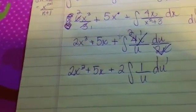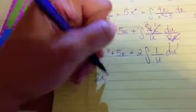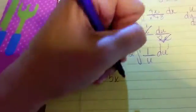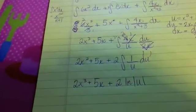the antiderivative of the natural log. And so then we get 2x cubed plus 5x plus 2 times the natural log of the absolute value of u, because we always need a